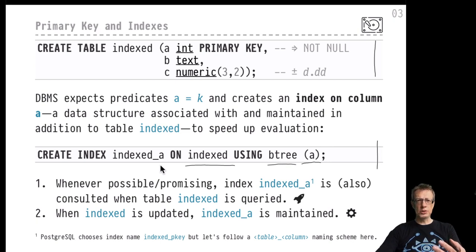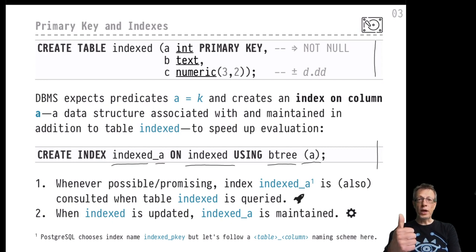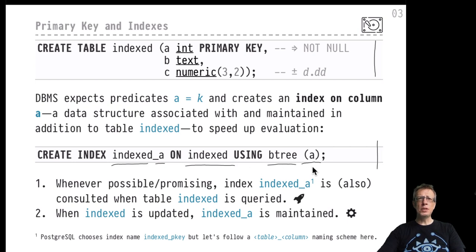Just like tables, indexes are named structures, and that makes sense because other SQL commands will refer to these indexes by name. In this course we follow the convention of using the table name, underscore, and then the column name on which the index is being built. Each column - or maybe a group of columns - can individually be the input to index construction. In this chapter we will talk about indexes over single columns only, and we will add multi-column indexes in the next chapter.